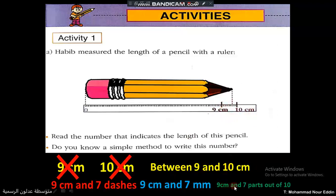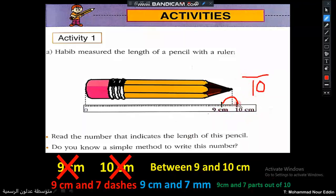We can say nine centimeters and seven parts out of ten. We say this because the measurement is between nine and ten, and between nine and ten there are ten divisions or ten parts. We took seven of them, meaning seven out of ten. The total number of parts is ten, and we are using seven parts. So we say seven over ten — nine centimeters and seven parts out of ten.